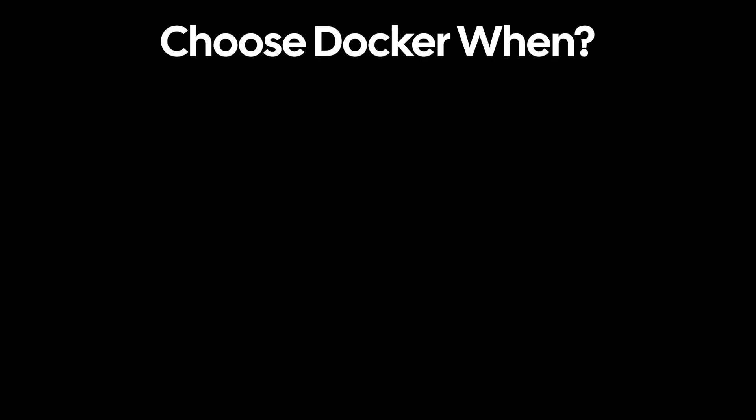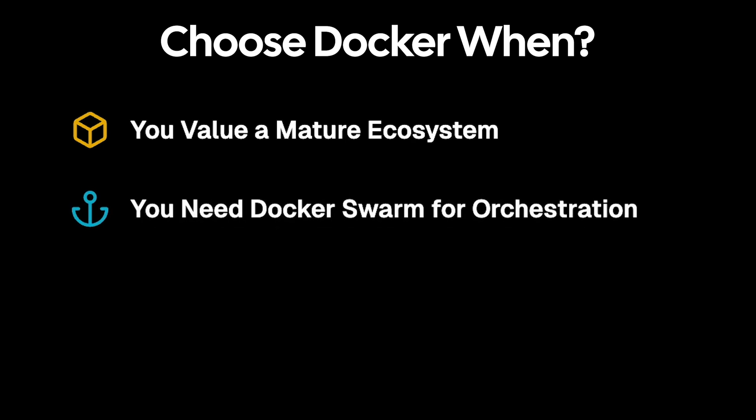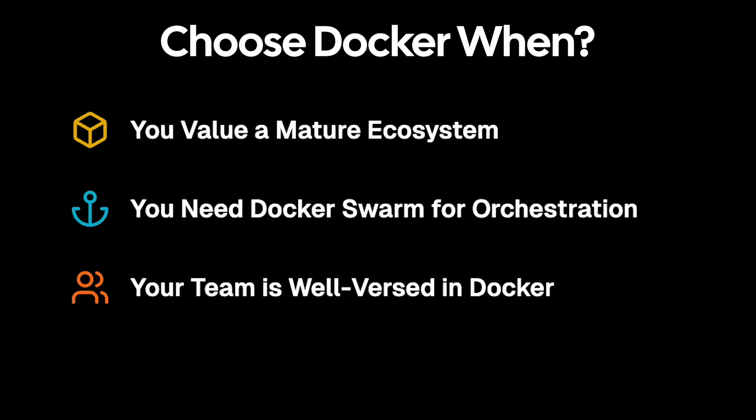On the other side, choose Docker when you value a mature ecosystem. Docker has a lot of third-party tools, a broader range of features, and integrations for various development and deployment workflows. There's also tons of documentation and content out there, making it more beginner-friendly, with more blogs and examples of advanced use cases. Choose Docker when you need Docker Swarm for orchestration — Podman does not natively support Docker Swarm, so you'd need to use Compose, Pods, or Kubernetes to get something similar. Also, if your development team is already well-versed in Docker with established workflows, switching to Podman might require additional training, especially since new team members are more likely to know Docker than Podman.